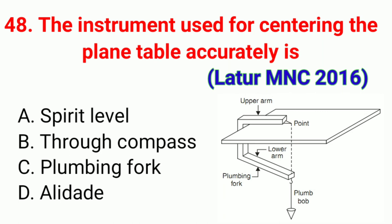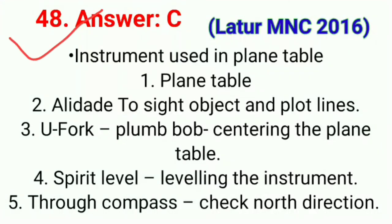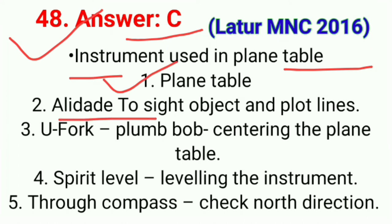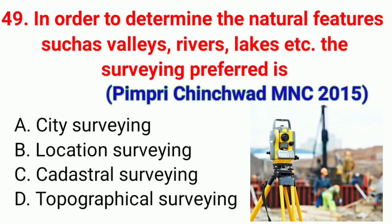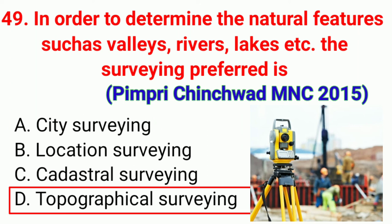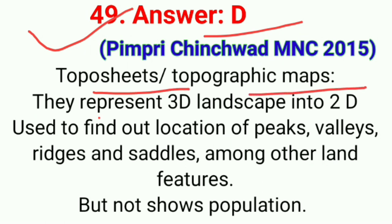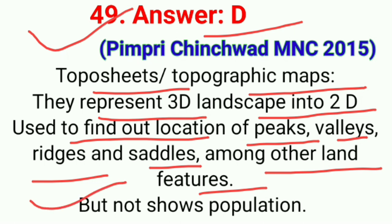Question number forty-eight and forty-nine: In order to determine natural features such as valleys, rivers, lakes, etc., the surveying preferred is. The correct answer is option D, topographical surveying. This question was asked in Pimpri Chinchwad MNC 2015. Topographic maps represent 3D landscapes in 2D, used to find peaks, valleys, ridges, and other land features, but do not show population data.